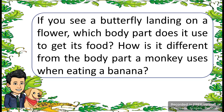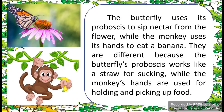Very good! The butterfly uses its proboscis to sip nectar from the flower, while the monkey uses its hands to eat a banana. They are different because the butterfly's proboscis works like a straw for sucking, while the monkey's hands are used for holding and picking up food.